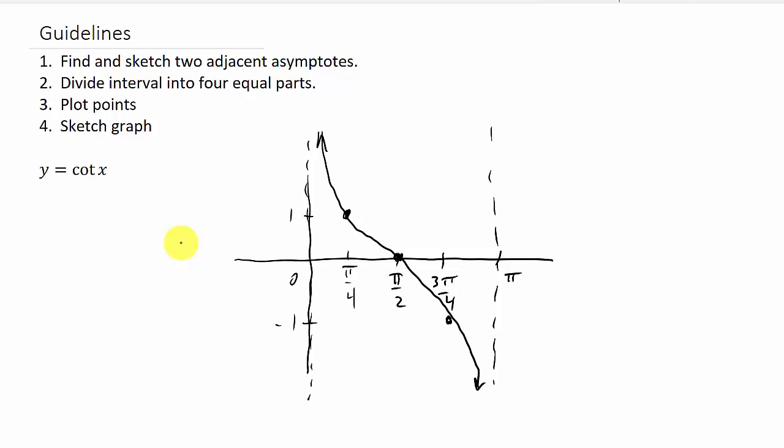Alright, so the first thing we need to do is look at some guidelines. So the first thing we do is find and sketch two adjacent asymptotes. So for cotangent, we know the cotangent, just regular cotangent x, is undefined at 0 and π. And that's what the two vertical asymptotes here are.